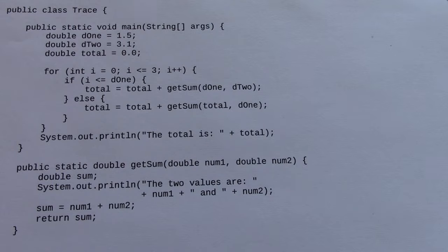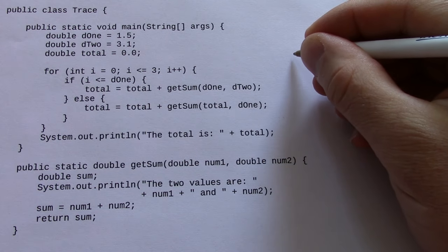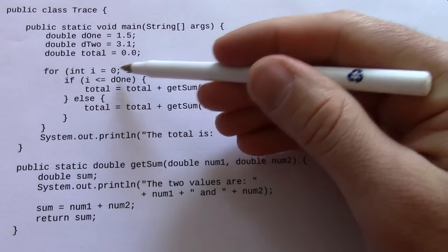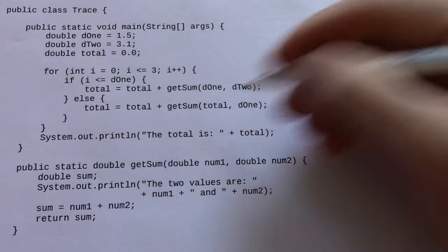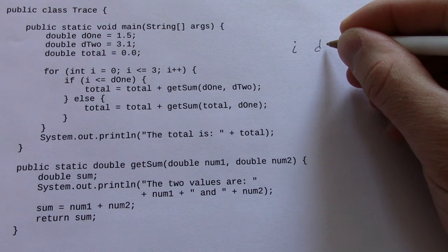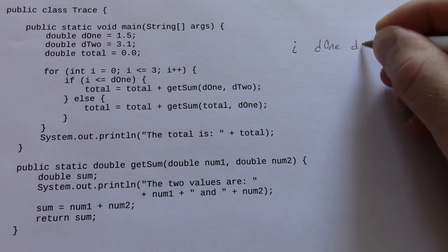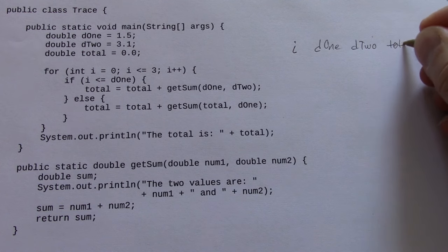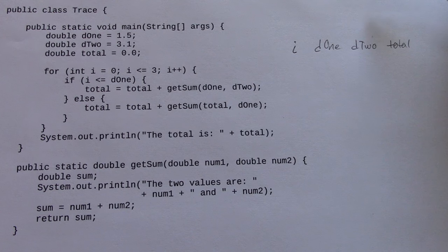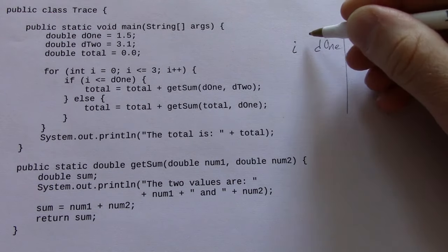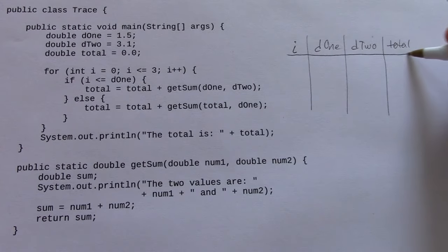The basic idea of tracing code by hand is to draw a table of all the variables that you have and see how the values of those variables change over time. So for one, I have this variable i that's part of my loop. And as this i loop runs, I'm going to be changing the values of d1, potentially, d2, and total. So I just take all the variables that I have in my method here, and I'm going to make a nifty little table, again, just to keep track of those values over time.